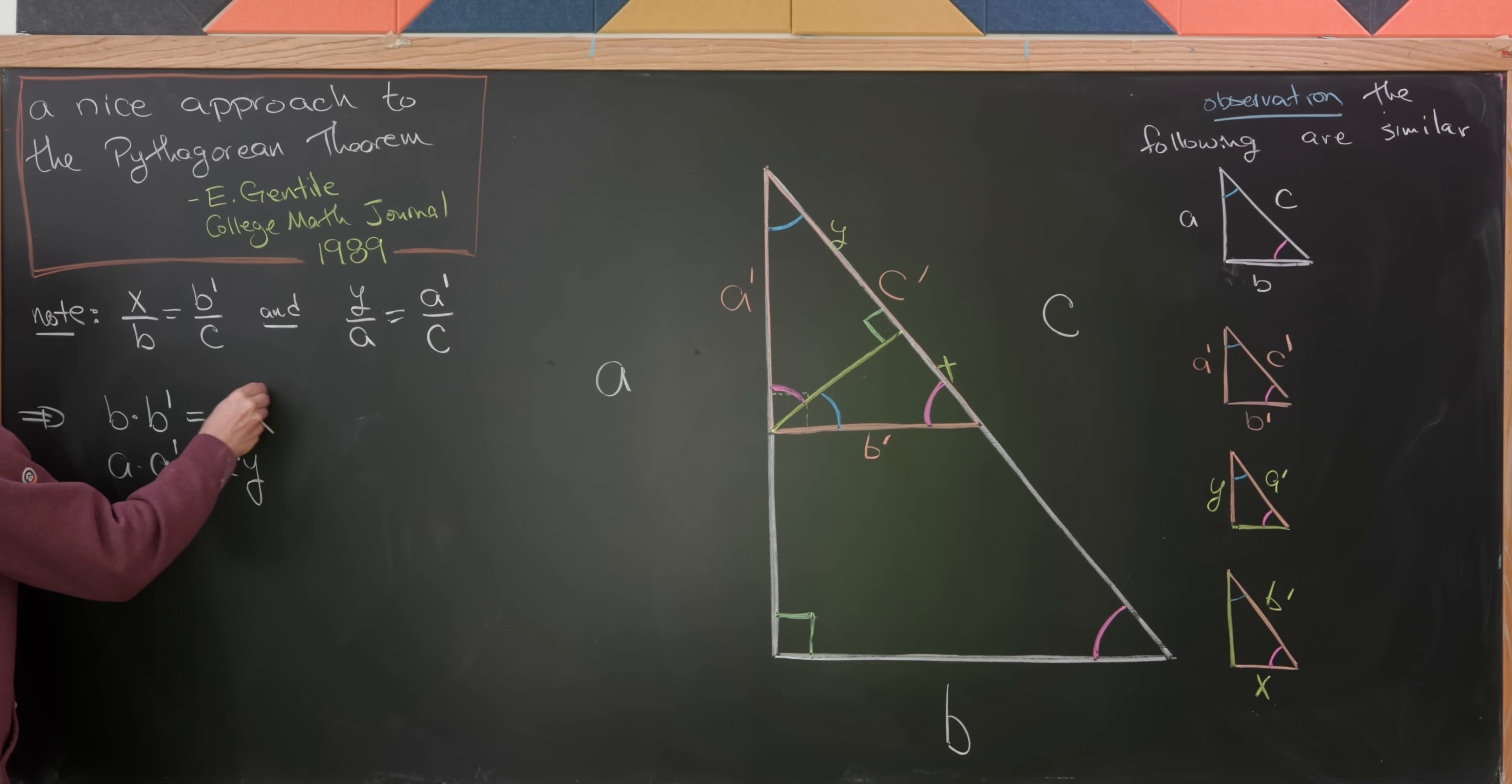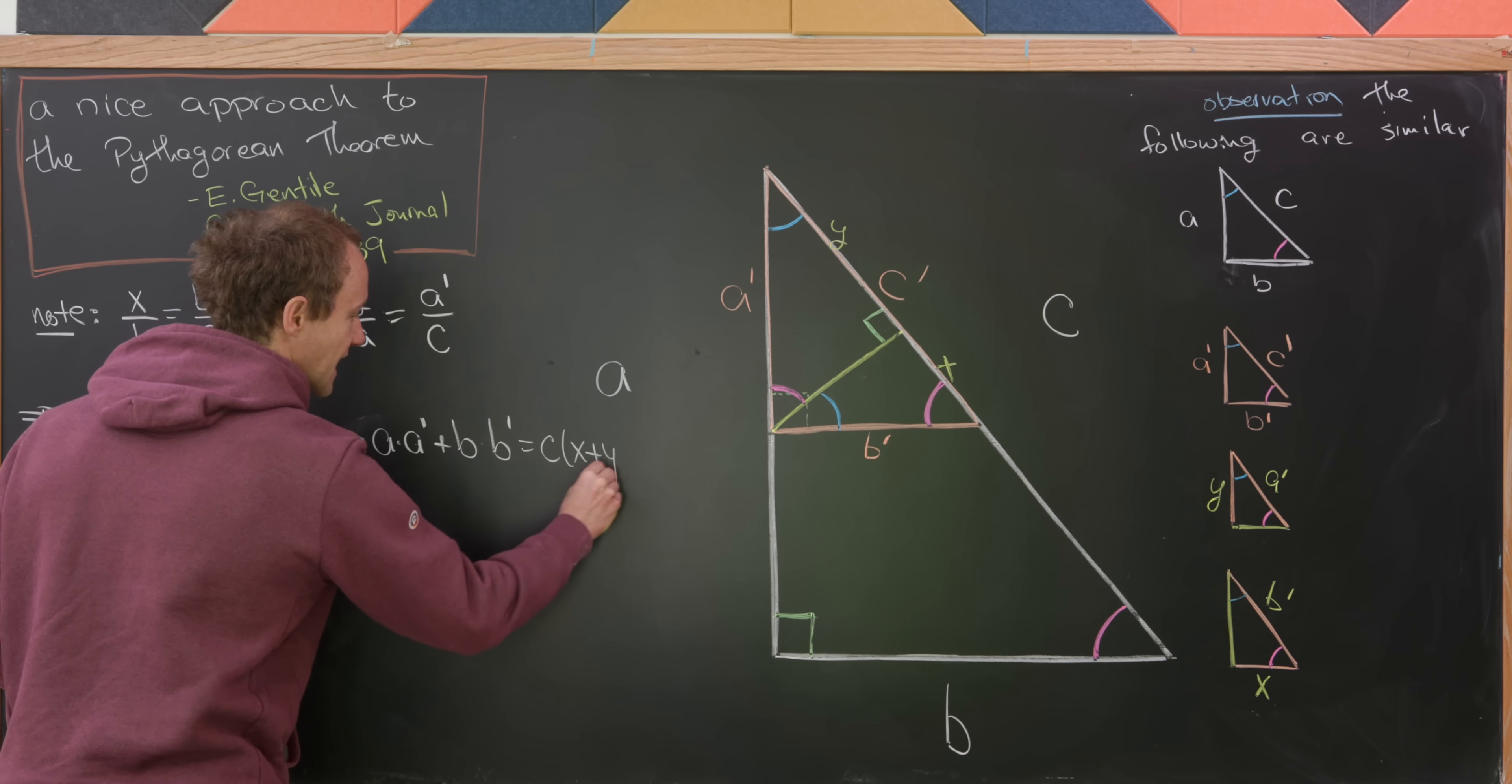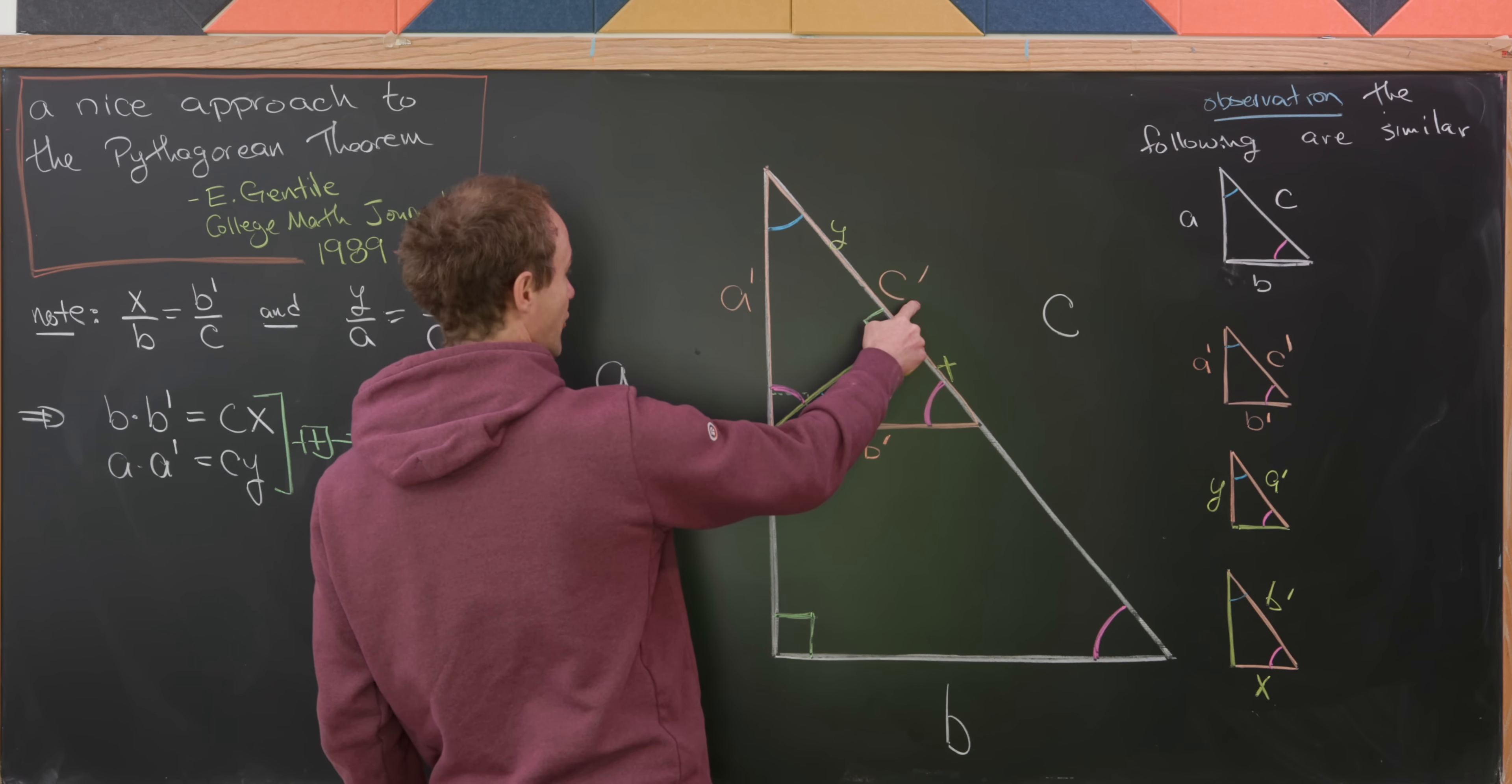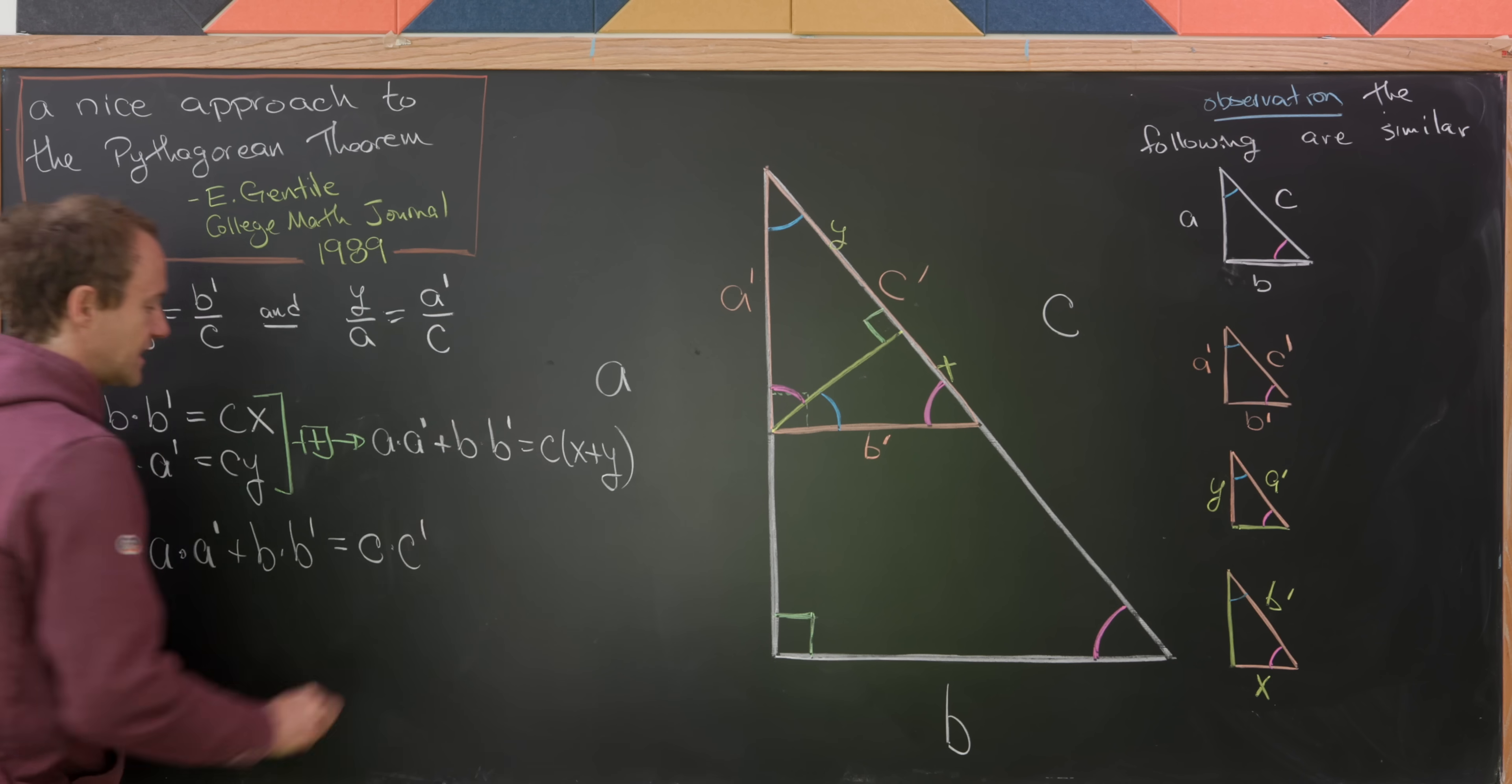And now what we'll do is take these two equations and add them. So what happens if we add these two equations? We're going to have a times a prime plus b times b prime is equal to c times x plus y, just factoring a c out of the left-hand side. But let's look over here. We observed earlier that c prime is equal to x plus y. So we can replace that x plus y with c prime. So here we have a times a prime plus b times b prime is equal to c times c prime.